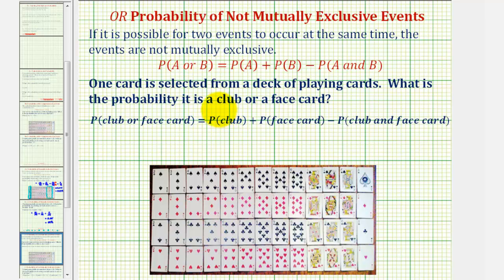Because a card can be both a club and a face card, these two events are not mutually exclusive. Therefore to find this probability, we'll find the probability that the card is a club, and then we'll add the probability of a face card, but then we'll subtract the probability that the card is a club and a face card.